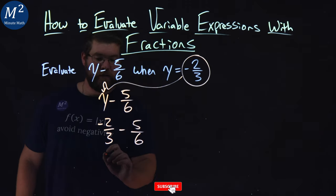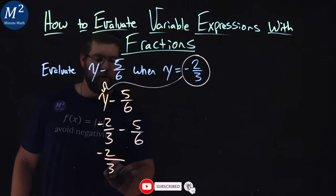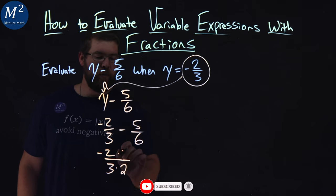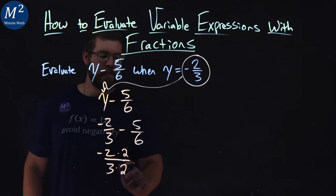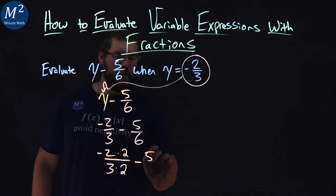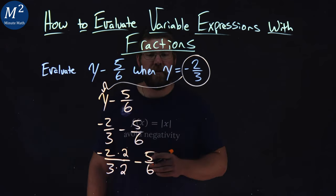So when I rewrite this, I'm going to write negative two-thirds. If I multiply 3 times 2, I multiply the numerator by 2, I get 6 in the denominator minus 5 sixths. The right fraction doesn't have to change.